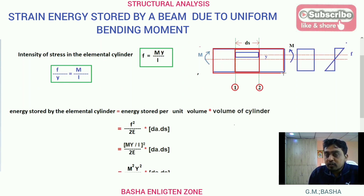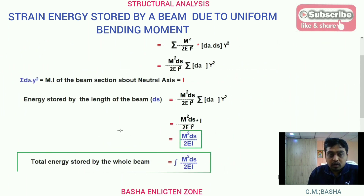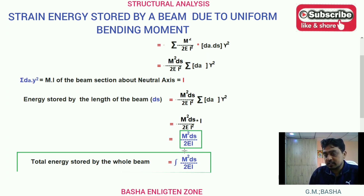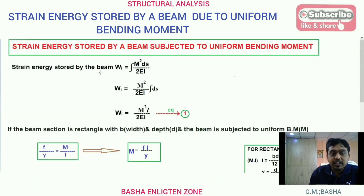For the entire beam, you take the integration of the strain energy stored by the elemental length. Integrating from 0 to L, you get the overall energy for the full beam. So the total energy stored by the whole beam will be equal to the integral of M squared ds by 2EI. Strain energy stored by the beam equals integral of M squared ds by 2EI.